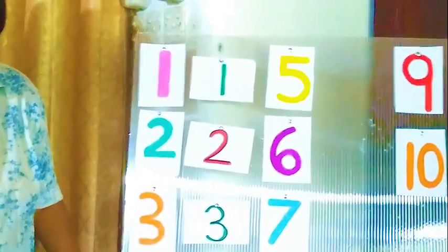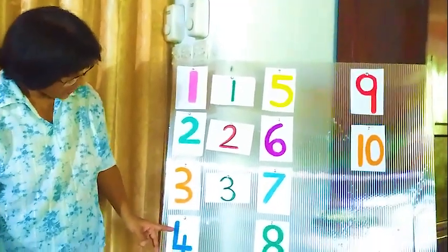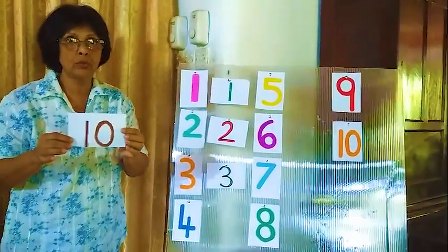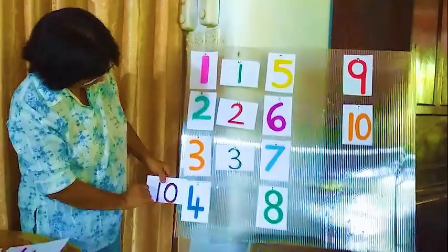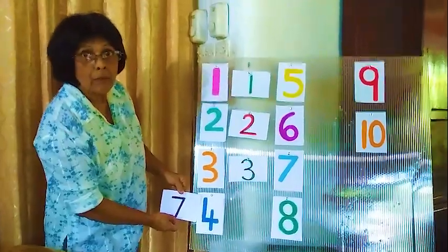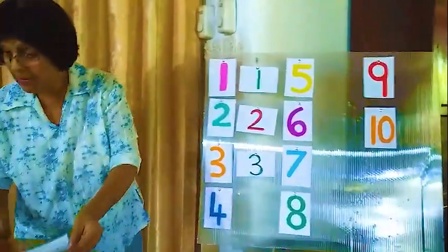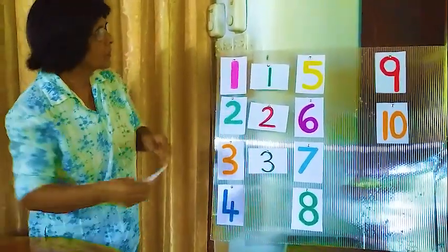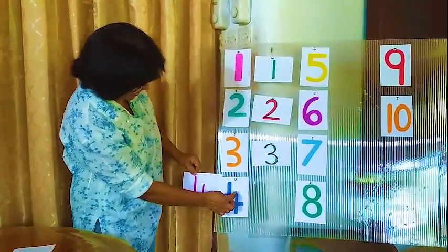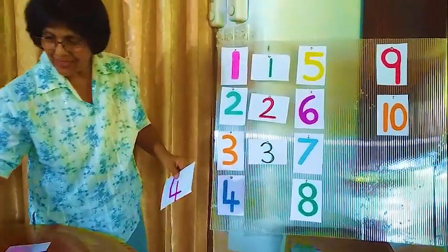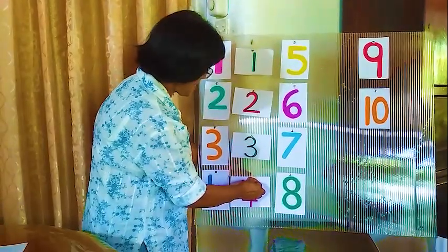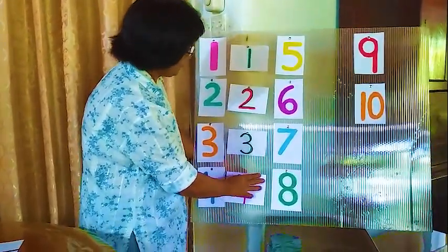Now next number — number 4. Is this number 4? No, this is not number 4. Is this number 4? No, this is number 7. Where is number 4 then? Here — this is number 4. We write like this. Here number 4. This is number 4. Alright.